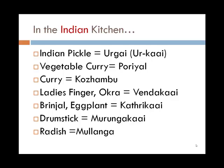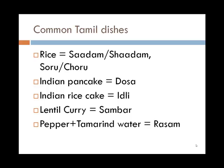A few items found in the Indian kitchen: pickle is called urghai. Vegetable curry generally is called poriyal. A curry with a lot of gravy is called korambu. Okra or lady's finger is vendakai, brinjal or eggplant is katrikai, drumstick is muringakai, and radish is mullanga. Common Tamil dishes: rice is sadam — some people say sadam, you can also call it soru or choru. Indian pancake is dosa, Indian rice cake is idli, the lentil curry that goes with it is sambar, and the pepper and tamarind water is called rasam.